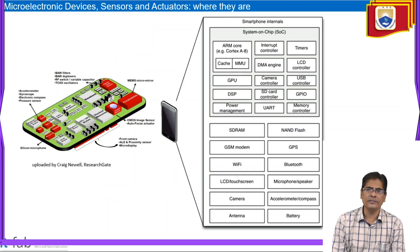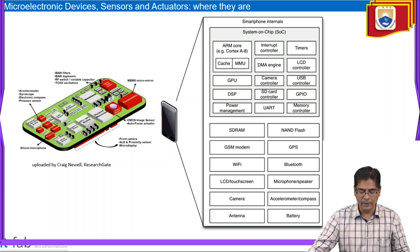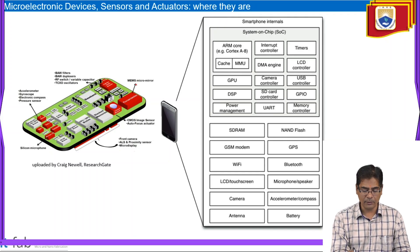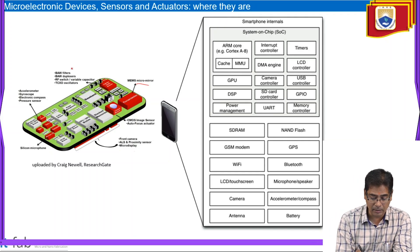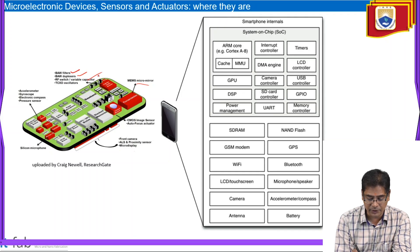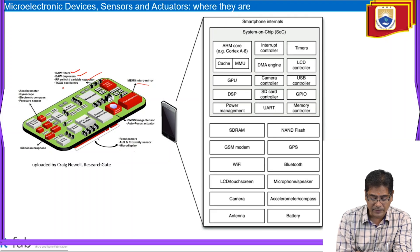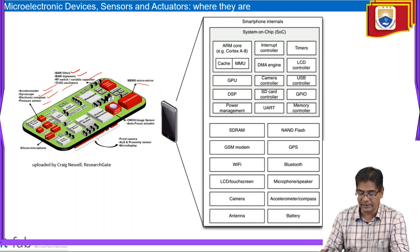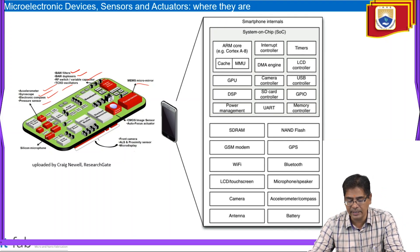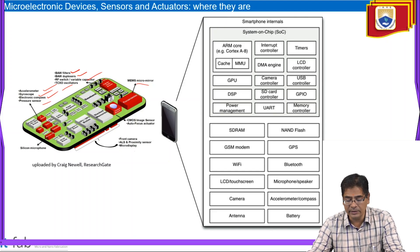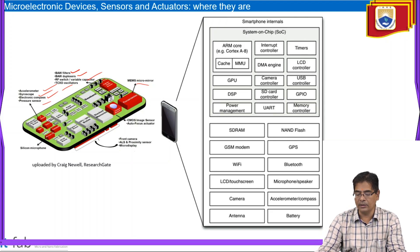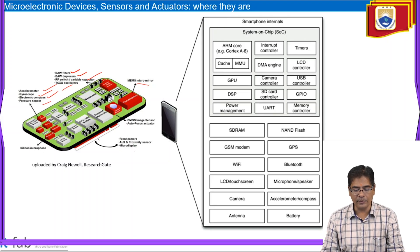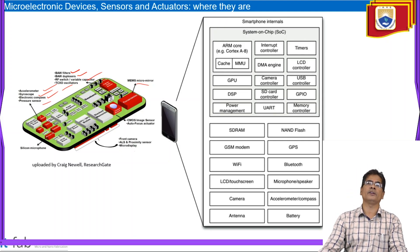Microelectronic devices, sensors, and actuators include MEMS micro mirrors, BAW filters, duplexers, RF switches, variable capacitors, and oscillators. A chip design can include accelerometers, gyroscopes, electronic compass, and pressure sensors. Smartphone internals include a system-on-chip (SOC) with ARM core, Cortex interrupt controllers, timers, LCD controllers, USB controllers, and memory controllers.